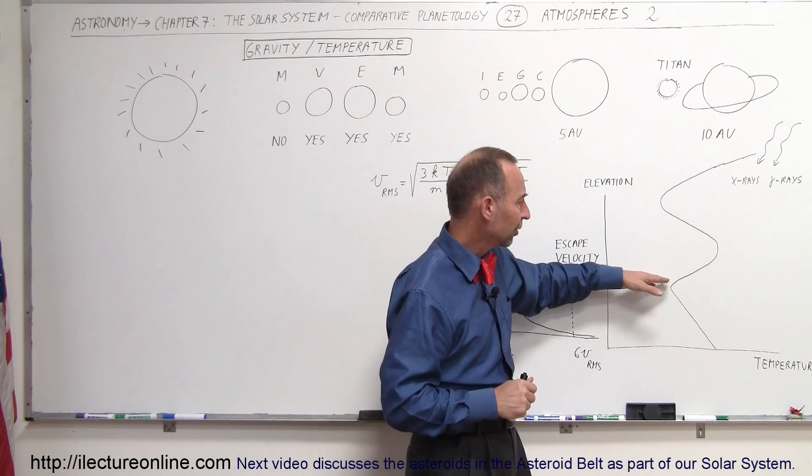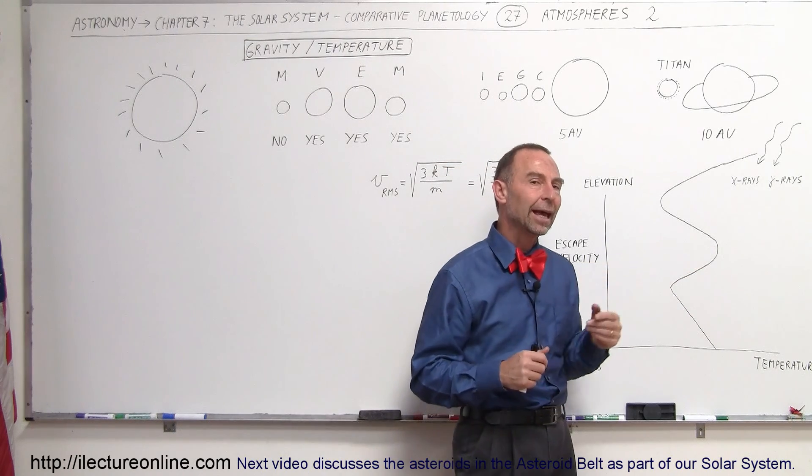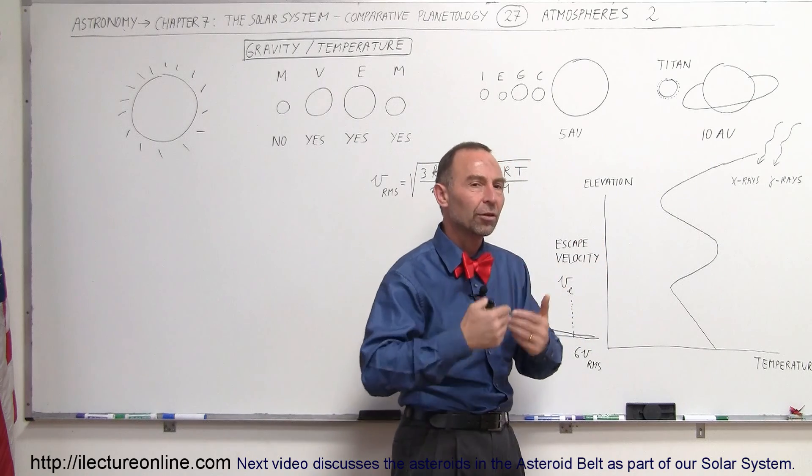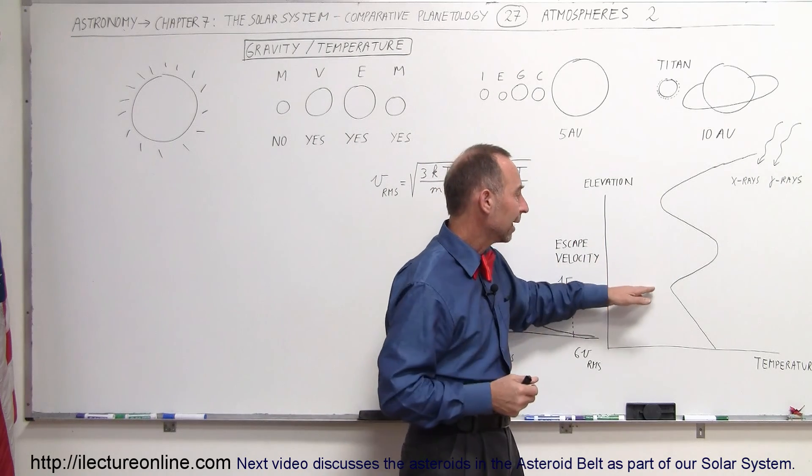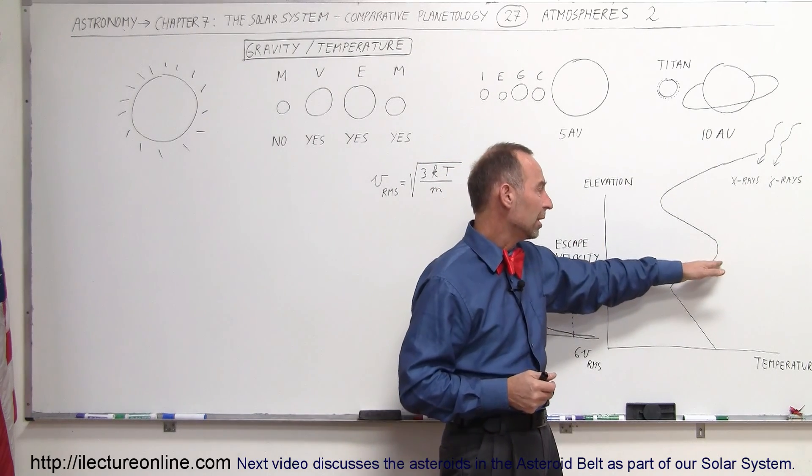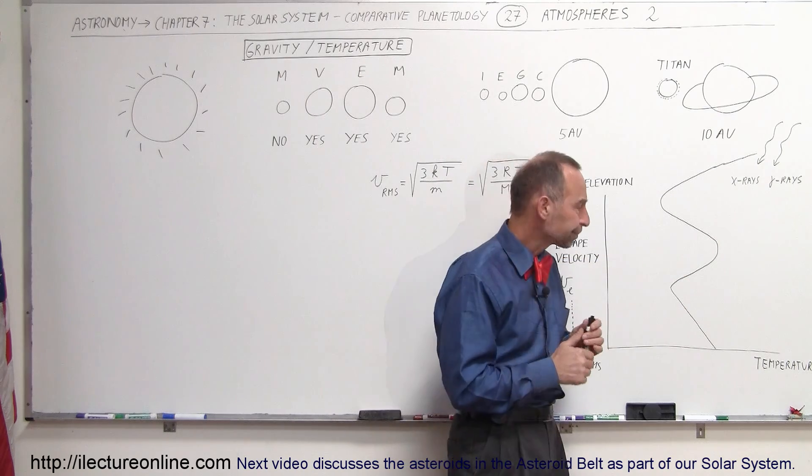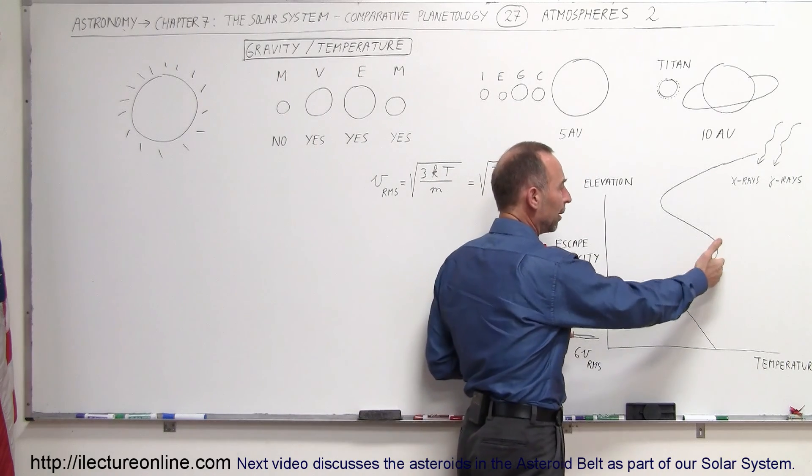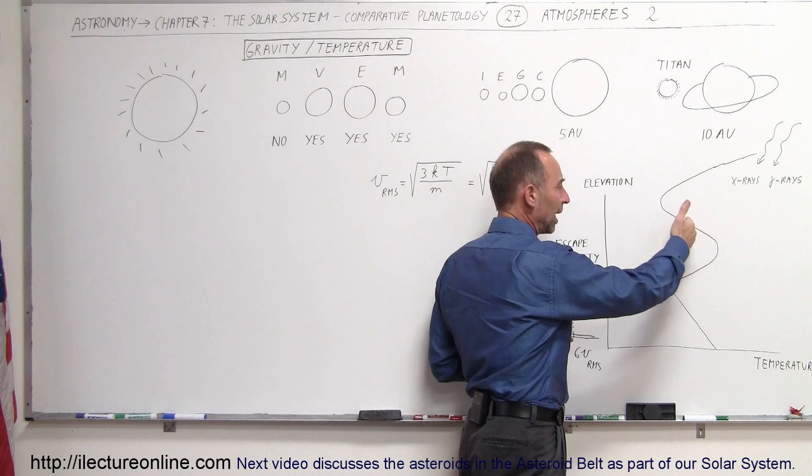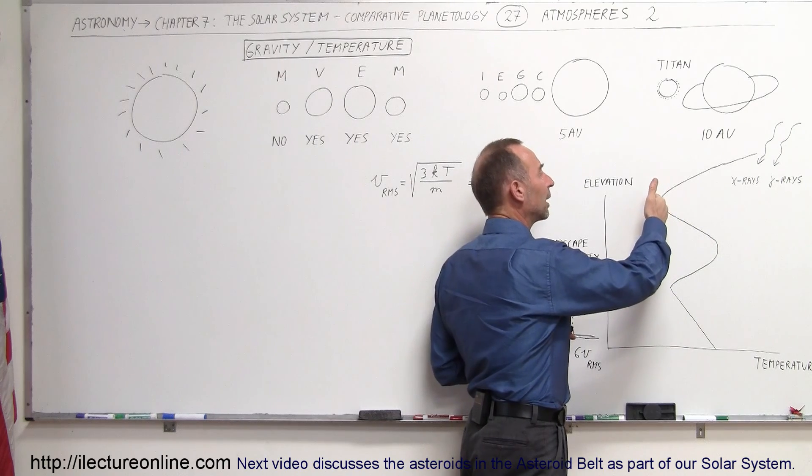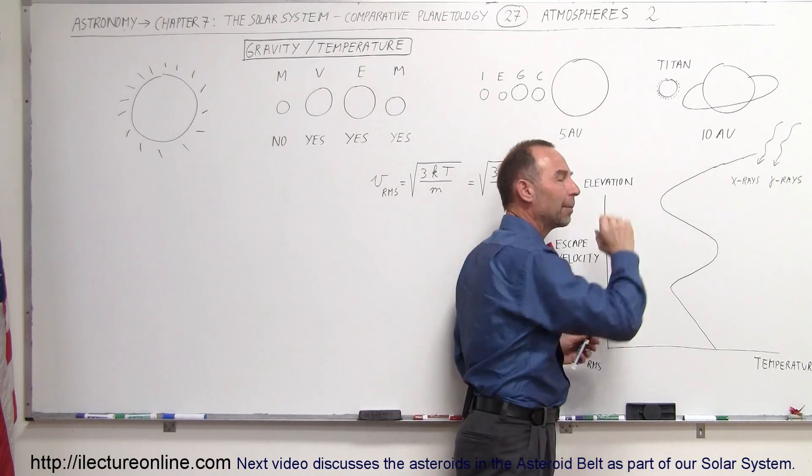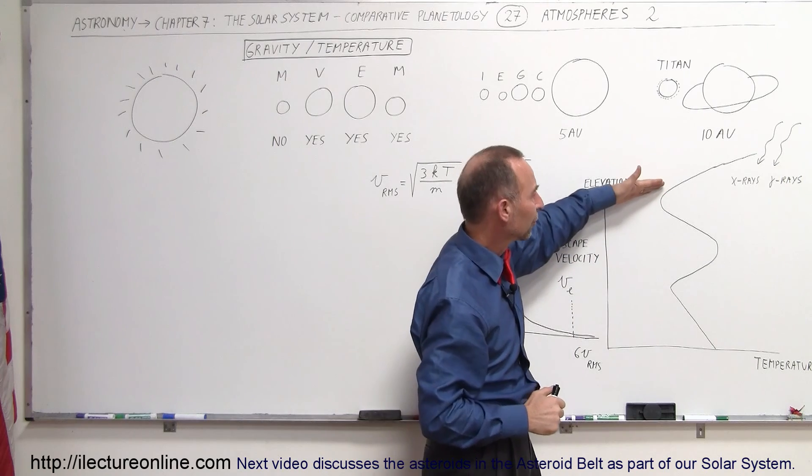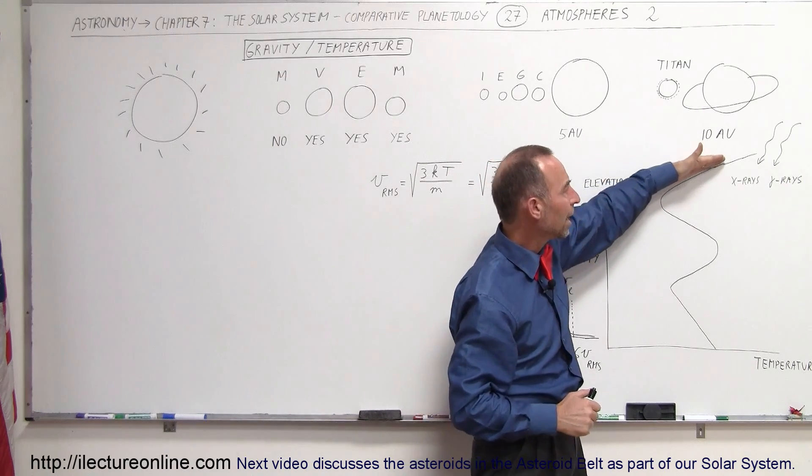But then, when we get into the stratosphere, the temperature begins to increase again, and that is due to the energy deposit of the UV radiation that deposits energy in the upper stratosphere. And then, as you go further up into the mesosphere, the temperature cools down again considerably, and then when we get all the way up in the ionosphere, way up into the highest regions of the atmosphere, you can see that the temperature of the atmosphere goes way up.